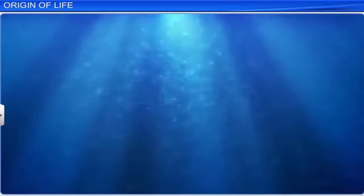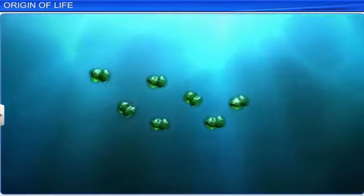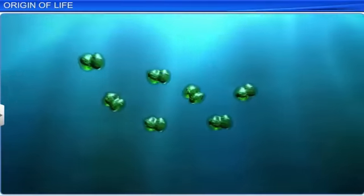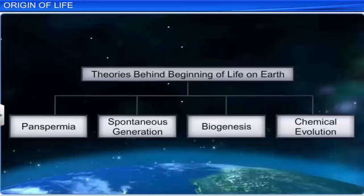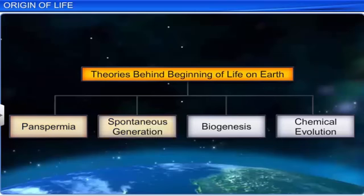It is estimated that life appeared on earth 500 million years after its formation. There are different theories that try to explain the beginning of life on earth. Some of them are panspermia, spontaneous generation, biogenesis and chemical evolution.